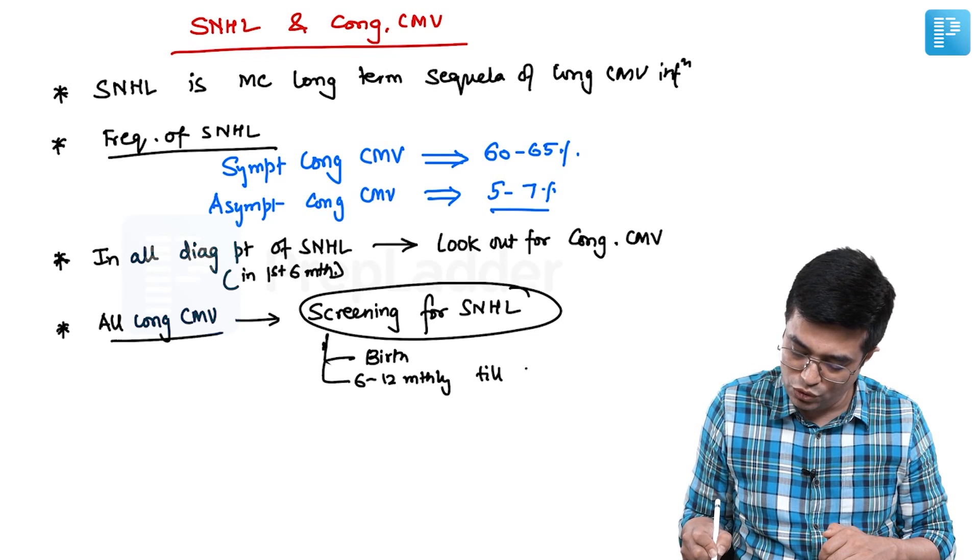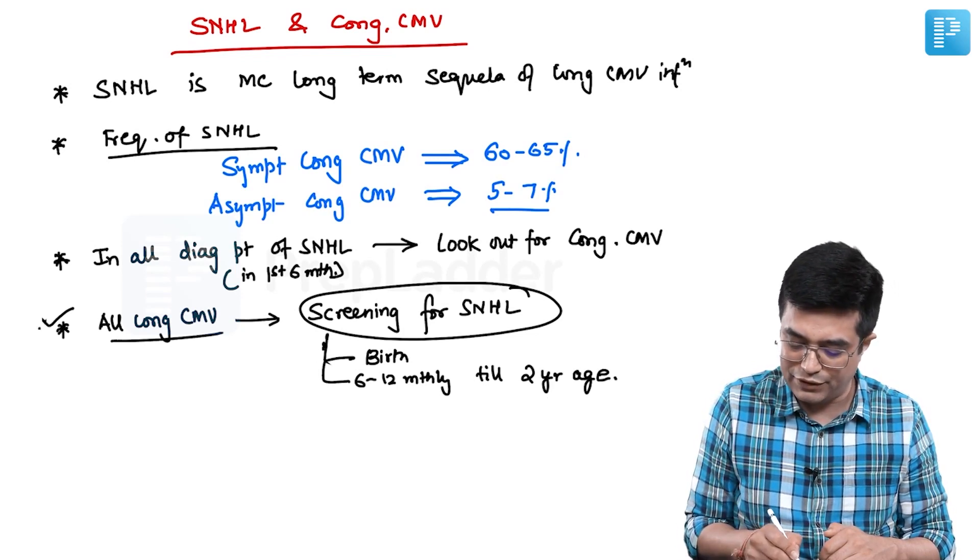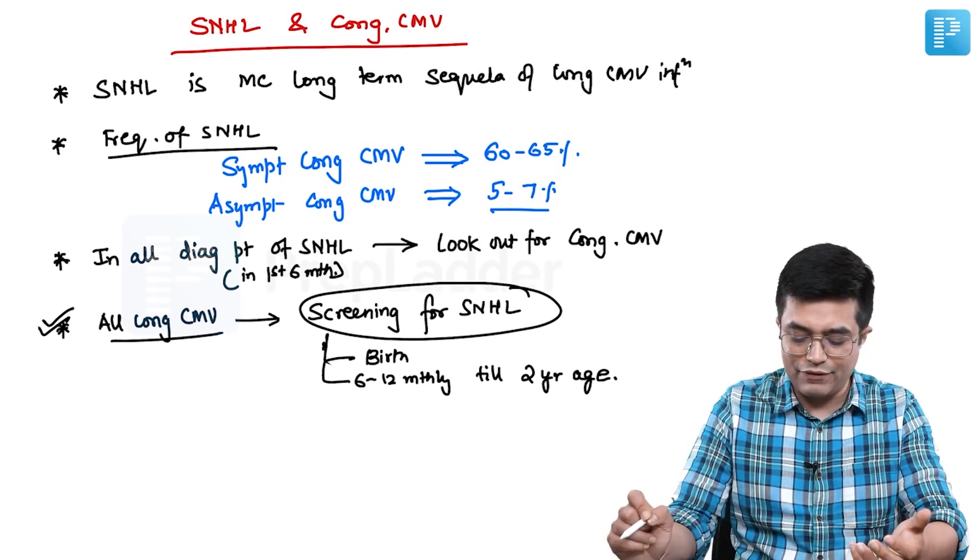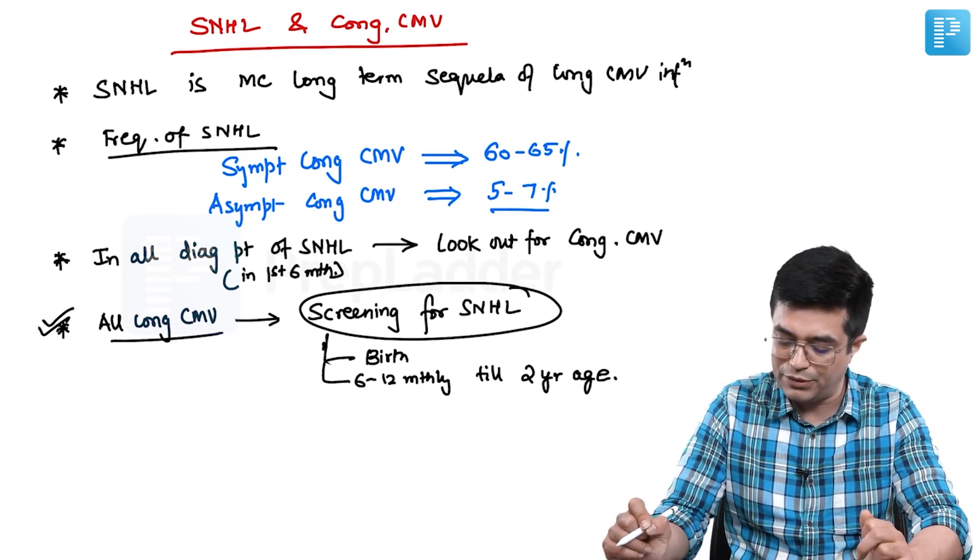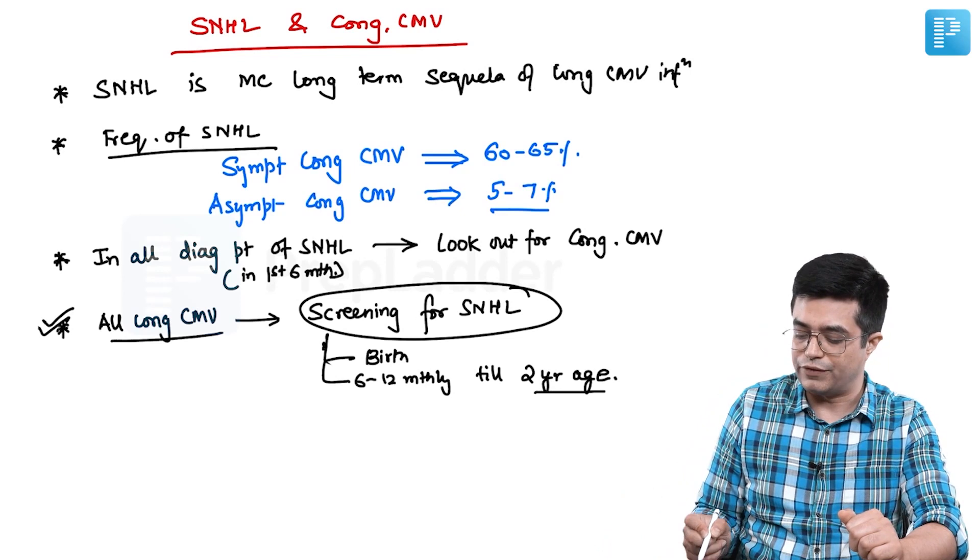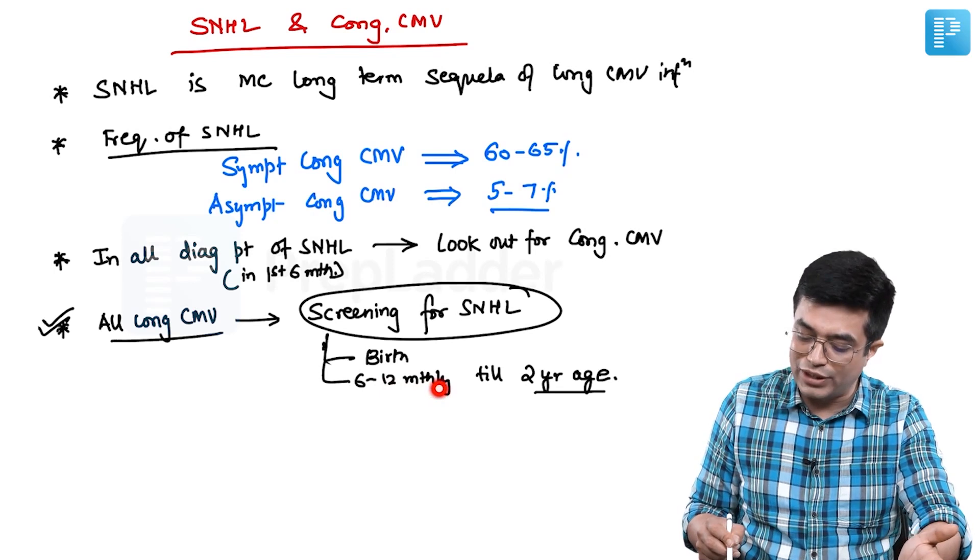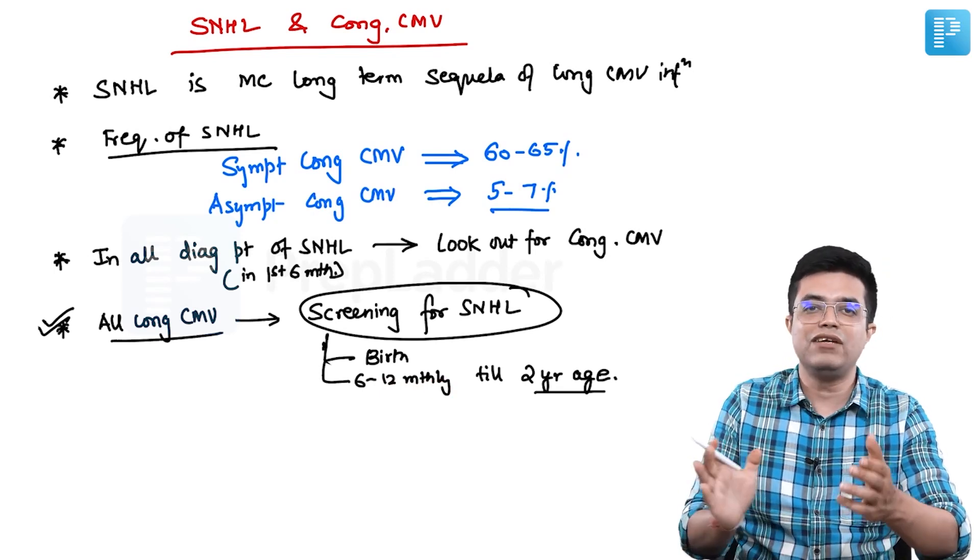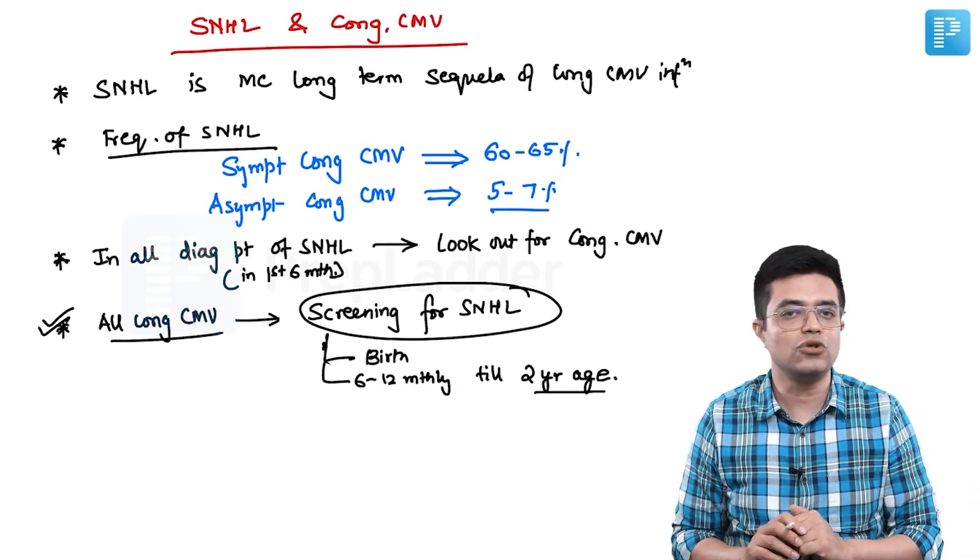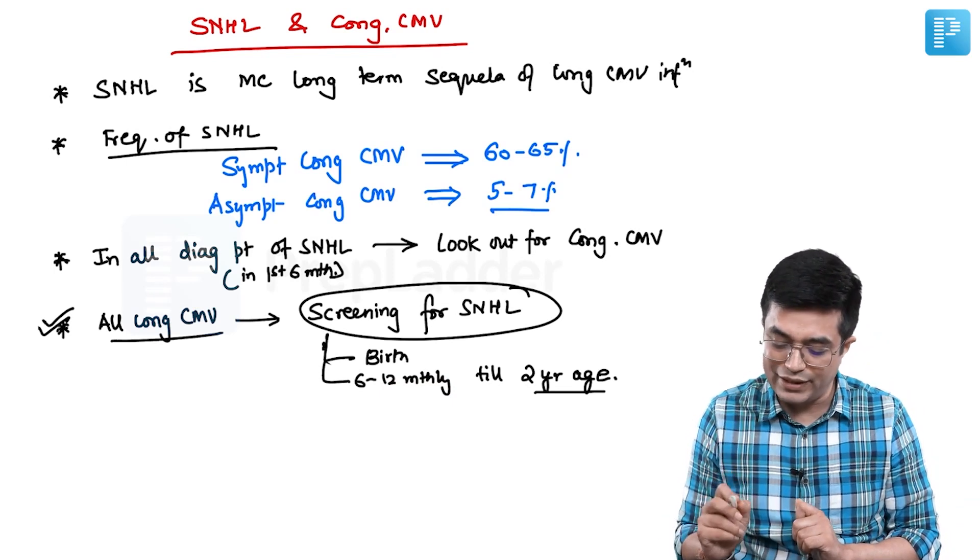till about 2 years of age. So even if they are asymptomatic congenital CMV infection, you find that there is evidence of CMV infection in the patient, you will do it till 2 years of age. Whether it is to be done 6 to 12 monthly or it is 6 monthly and sometimes annual examination till 2 years of age, it varies across various guidelines. There is no consensus on that.